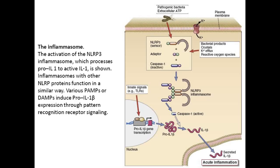The activation of the NLRP3 inflammasome, which processes pro-IL-1β to active IL-1β, is shown. Inflammasomes with other NLRP proteins function in a similar way. Various PAMPs or DAMPs induce pro-IL-1β expression through pattern recognition receptor signaling.